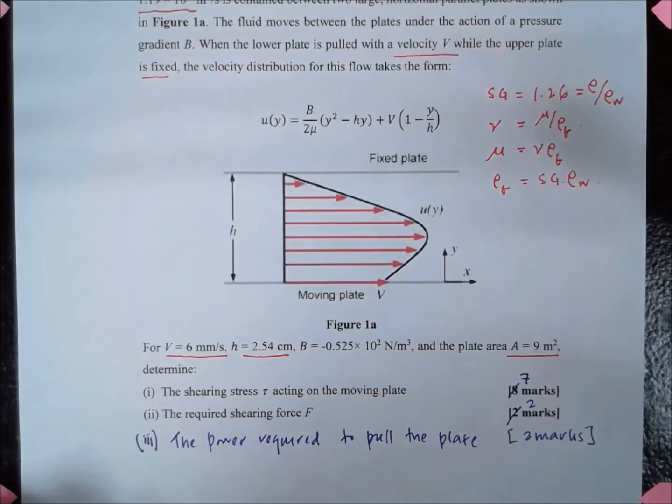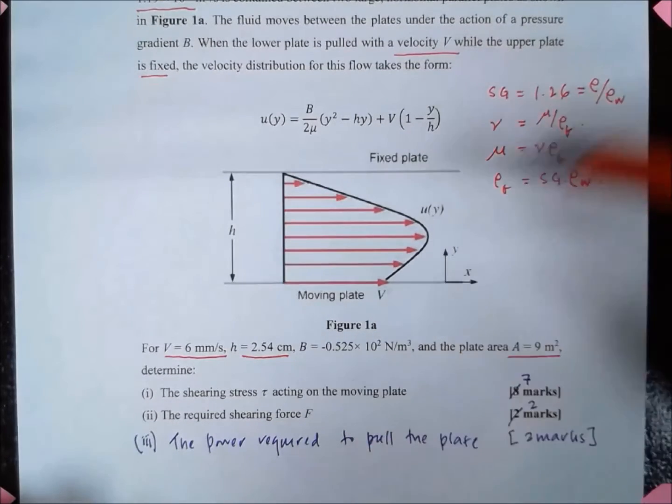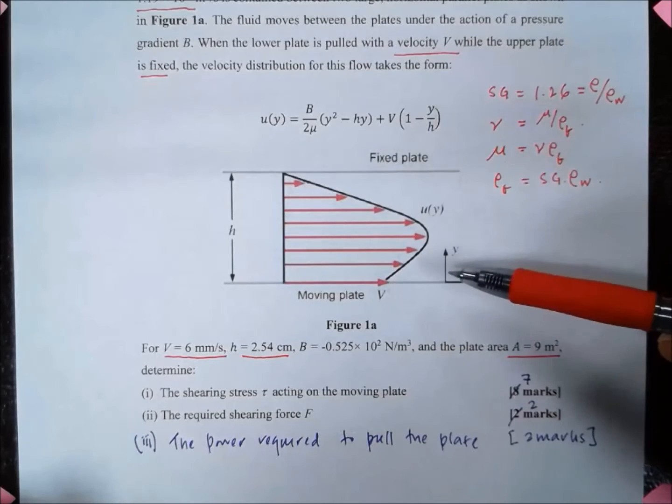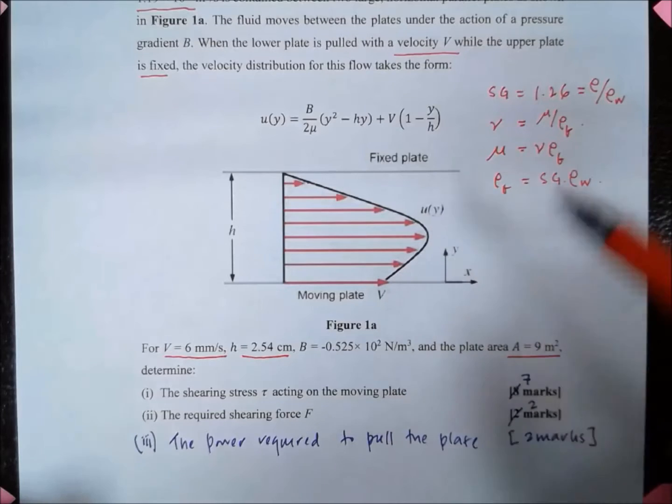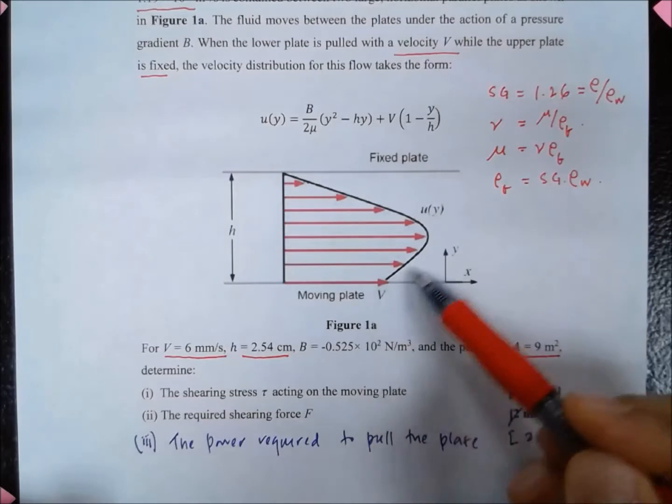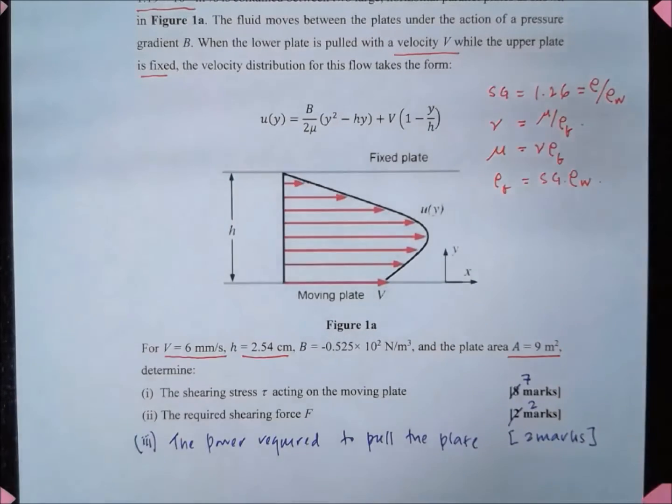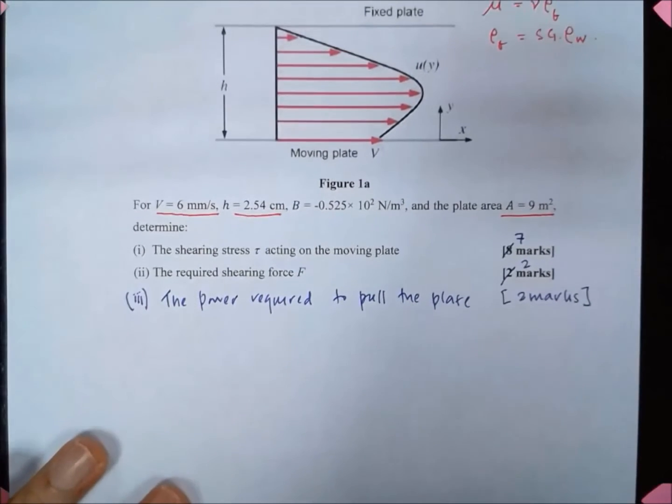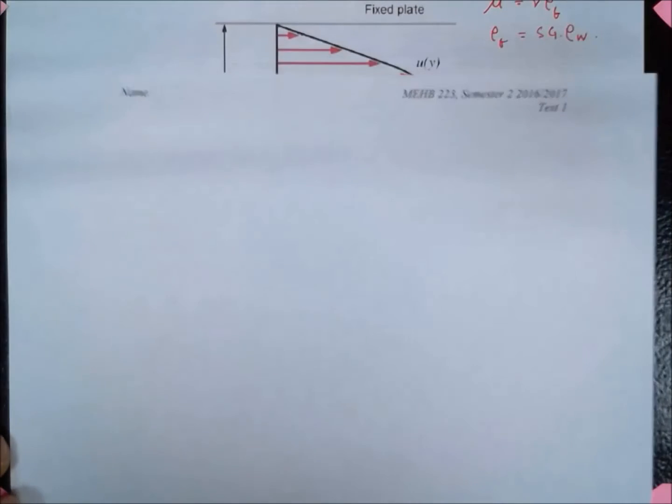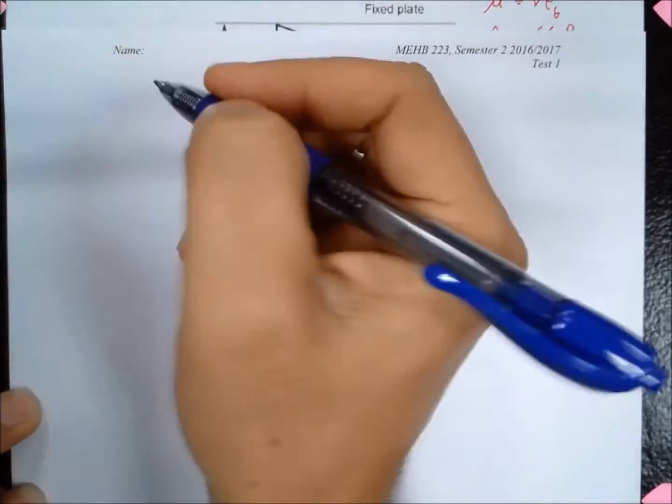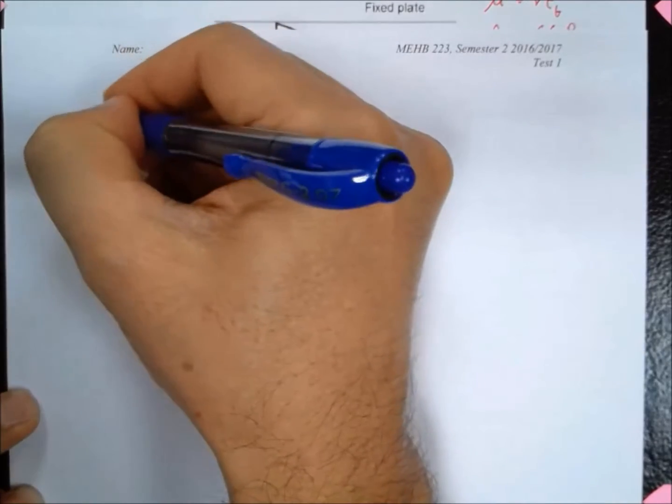In order to determine the shearing stress tau, tau is actually equal to mu multiplied by the velocity gradient. The velocity gradient is given by the gradients here.